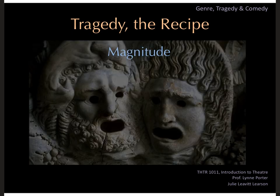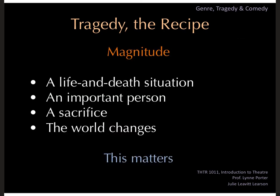A key ingredient to a tragedy is magnitude. Literally, magnitude means scope or size or scale — extent, quantity, value. It's a measurement. What we have in tragedy is a life-and-death situation, an important person, a sacrifice that comes as a result of a catastrophe they kind of caused, and then a world that changes. Magnitude in terms of tragedy means big consequences for big actions. The stuff that happens in tragedy matters to these characters a lot.